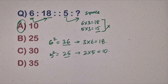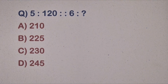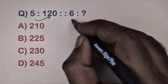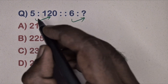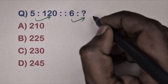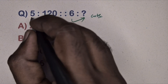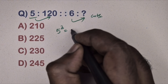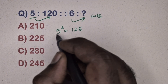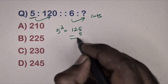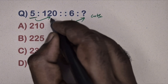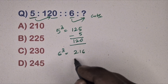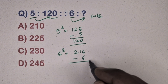Next question: 5 is related to 120, 6 is related to which number? This uses the cube method. Take 5: 5³ = 125, subtract the same number 5, so 125 − 5 = 120. Same way, take 6: 6³ = 216, minus 6 gives 210. So 210 is the correct answer.